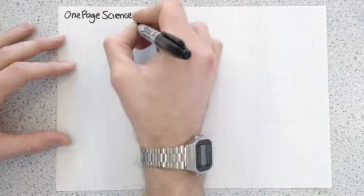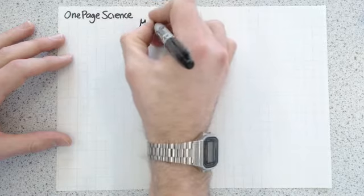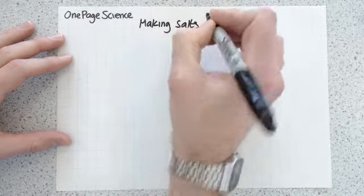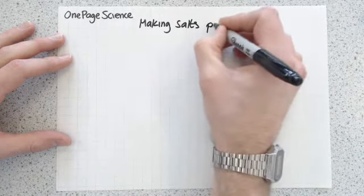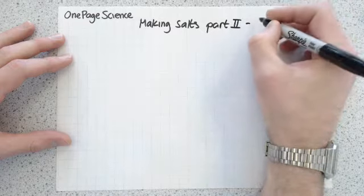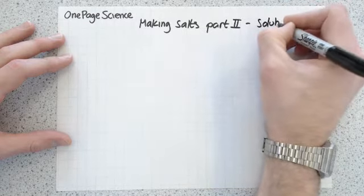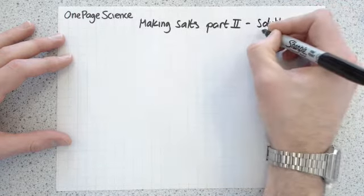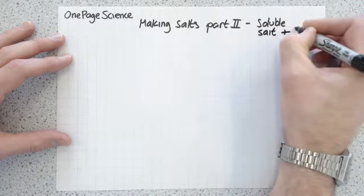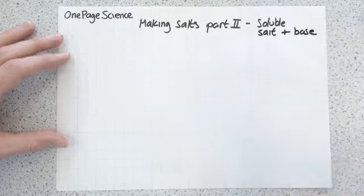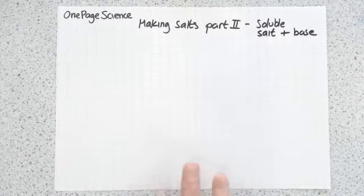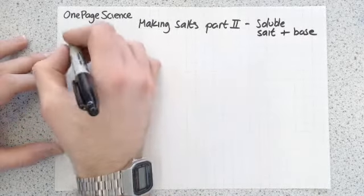This time we're going to look at making salts — part two, which is when you have a soluble salt and base. Basically everything in this is soluble, so we can't do any filtration.